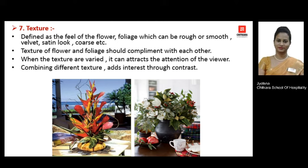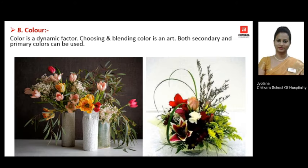Next is the principle of texture. When making your flower arrangement, be very specific in choosing the flowers and leaves. The texture of flower material can be very coarse, smooth, soft, or can give a satin look. Different textures can be added to create attention, so be very specific and choose contrasting textures to create an entirely different look.